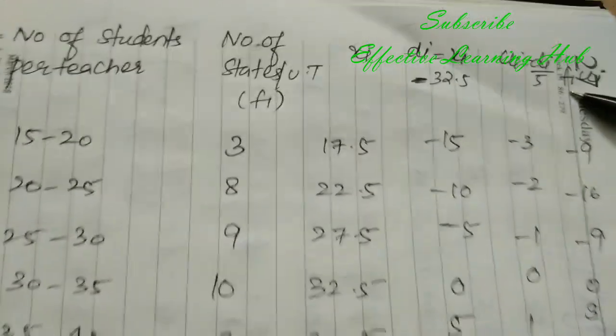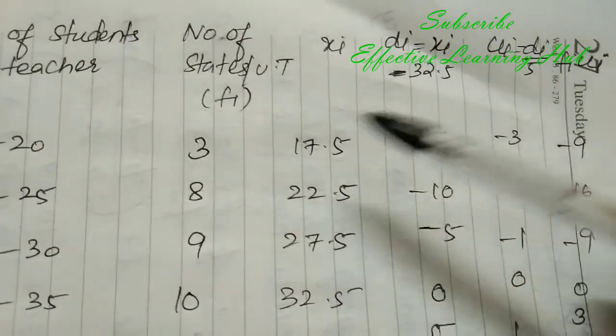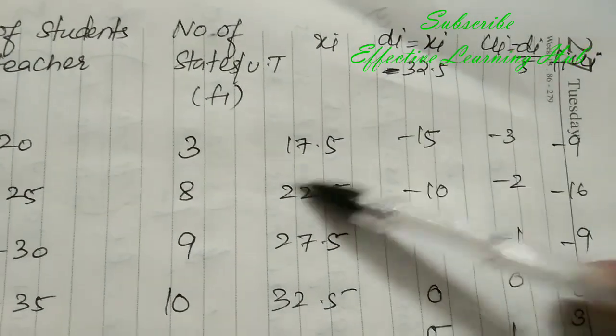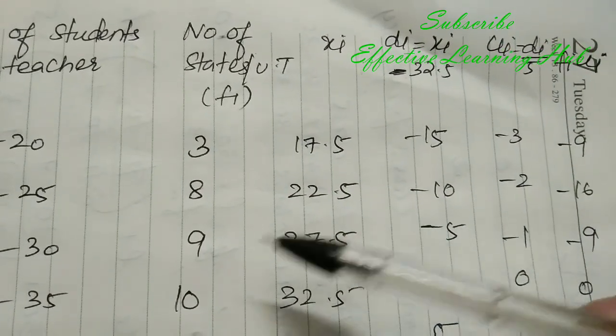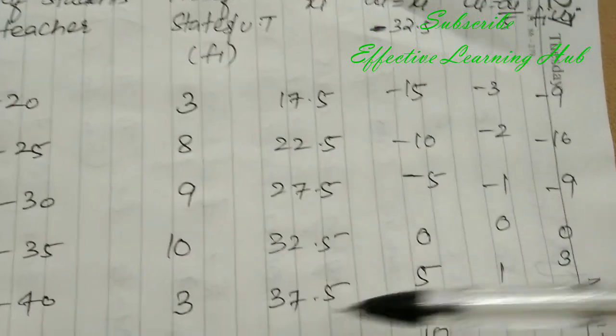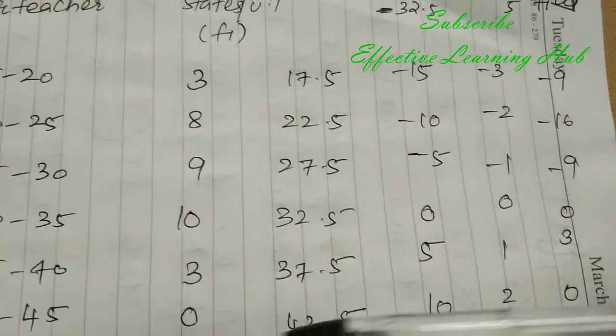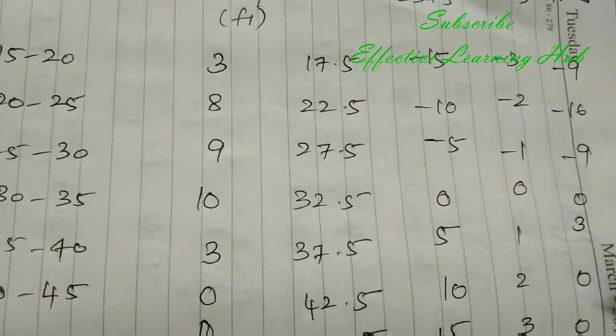Now FI UI, FI into UI. FI value 3, UI value minus 3, so 3 into minus 3 is minus 9; 8 into minus 2 is minus 16; 9 into minus 1 is minus 9; 10 into 0 is 0; 3 into 1 is 3; 0 into 2 is 0; 0 into 3 also 0.